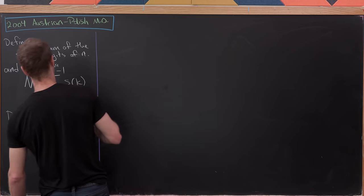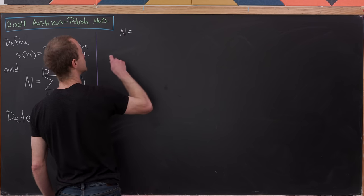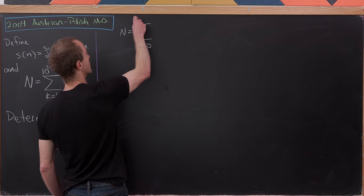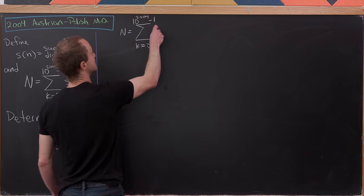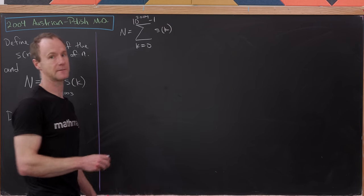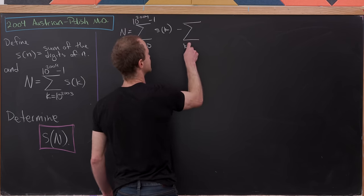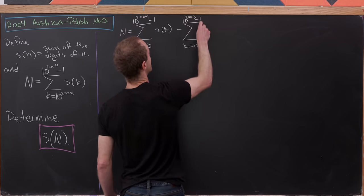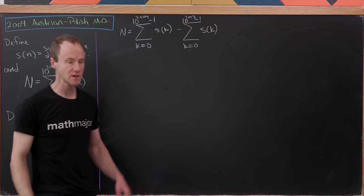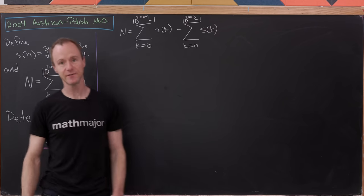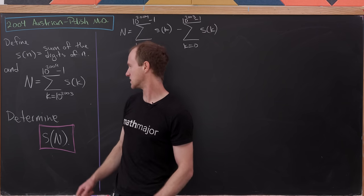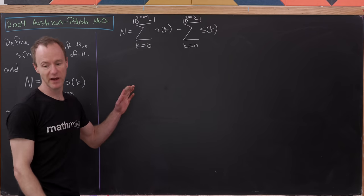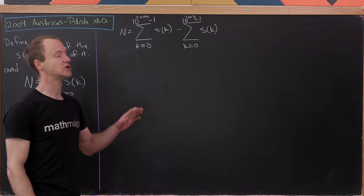Let's observe that N can be rewritten as a difference: the sum as k goes from 0 to 10^2004 minus 1 of S(k), minus the sum as k goes from 0 up to 10^2003 minus 1 of S(k). Expressing it as this difference really just changes the starting point, but it'll be a little bit easier to work with.